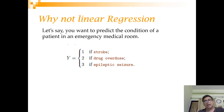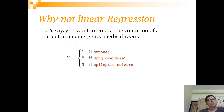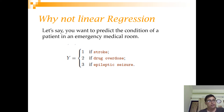Consider a scenario where you have a multi-class variable: 1 for stroke, 2 for drug overdose, and 3 for epileptic seizure. If you try to fit a linear regression to this problem, there are some important issues to consider.